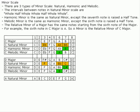Melodic minor is the same as harmonic minor, except the sixth note is raised a halftone. The relative minor of a major has the same notes starting from the sixth note of the major.